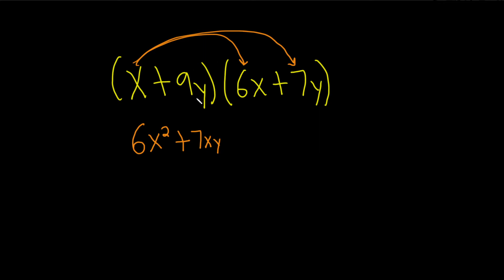Now we go to the 9y. Same thing. So 9y times 6x. Well 9 times 6 is 54. So we have 54, and we just keep the xy.